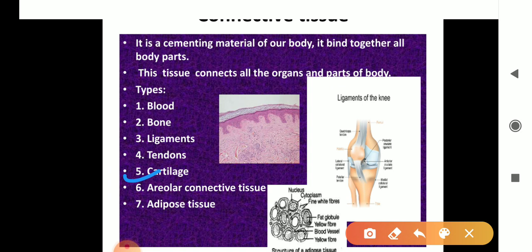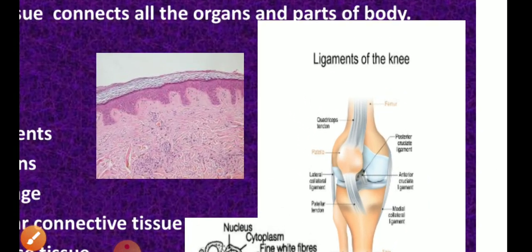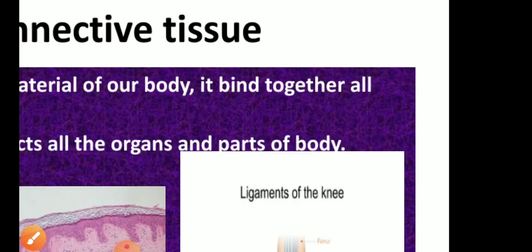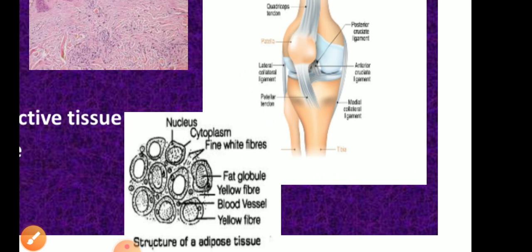Next is cartilage. Cartilage is a soft type of bone found in the nose tip, pinna of the ear, and also in between the joints.